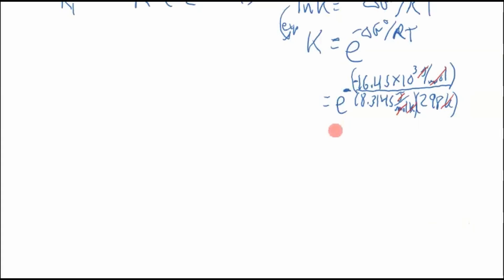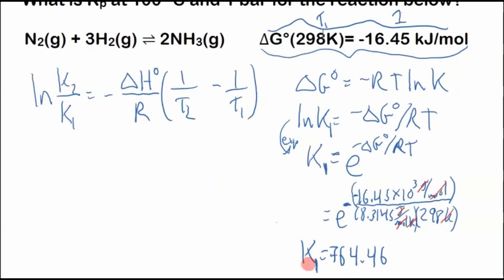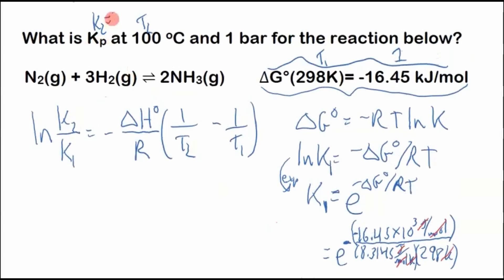So that's our K, 764.46. Now I'm going to call this K1. It doesn't matter which K this is, but I'm going to call these the 1s, and then this will be K2, and this will be T2. This will be T1 here. So that's important when we're plugging it into our Van't Hoff equation. So now that we got our K1, we want our K2. That's our question mark. We have our two Ts, but we don't have the change in enthalpy for this reaction.